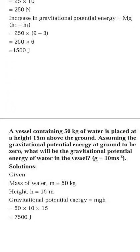A vessel containing 50 kg of water is placed at a height of 15 meters above the ground. Find the potential energy. Simply use the formula mgh: mass is 50, h is 15, g is 10, multiply to get the answer. The note saying gravitational potential at ground is zero is actually not needed.